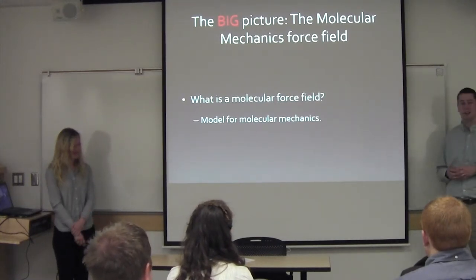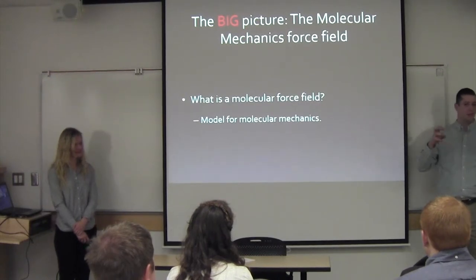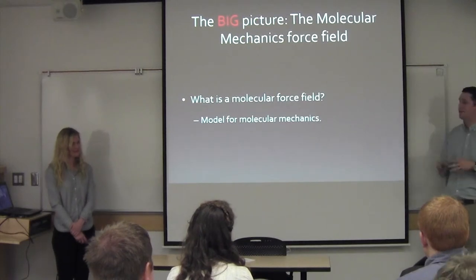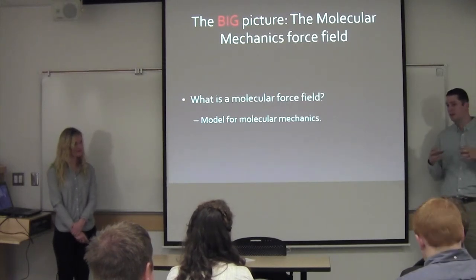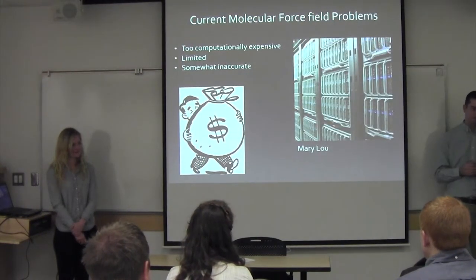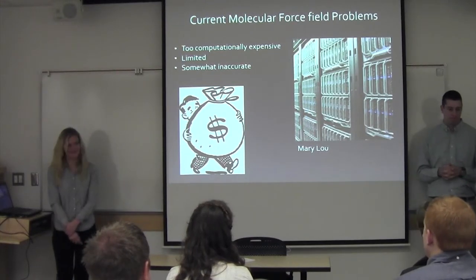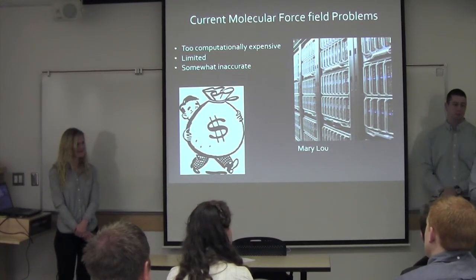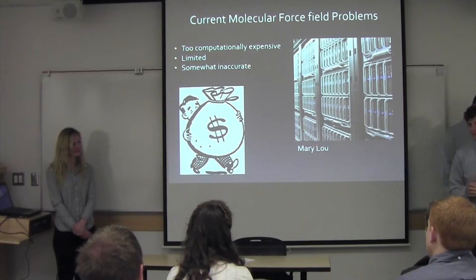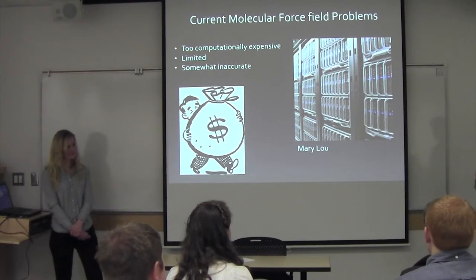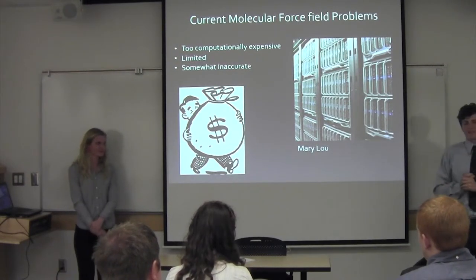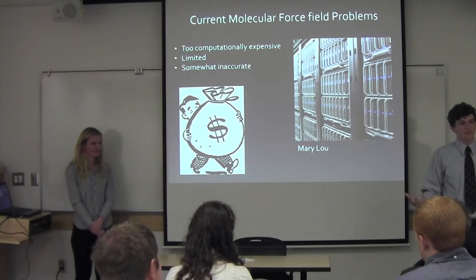Think of molecular mechanics like balls and springs. You have atoms, and between them is a spring that can compress and expand. Molecular mechanics is the way to find the optimal length of that spring between two atoms given their electronegativities. The reason we don't like this form of theory is because it's very computationally expensive — it will take hours to run even simple molecules like a water molecule. And because of this computational expense, it's very limited in the range of atoms you can use.